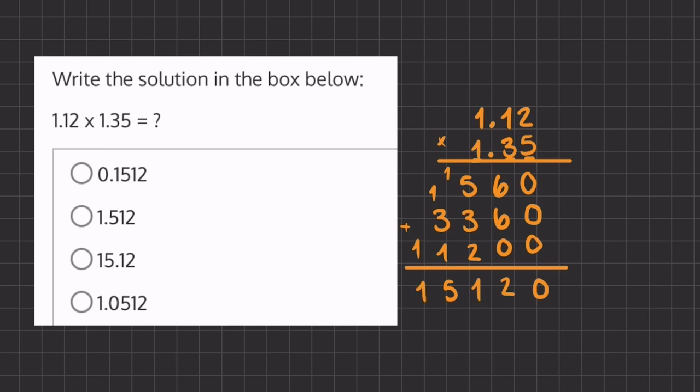Now we're going to place our decimal place by the amount of numbers we have after the decimals. We have 1, 2, 3, 4 numbers after the decimal of the two numbers we multiplied. So now we're going to move 1, 2, 3, 4 places. Our final answer is going to be 1.512.